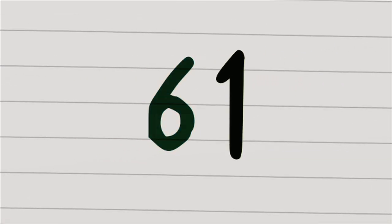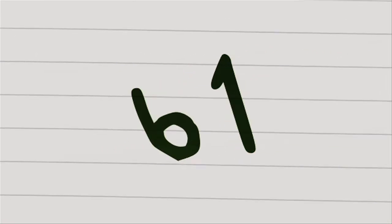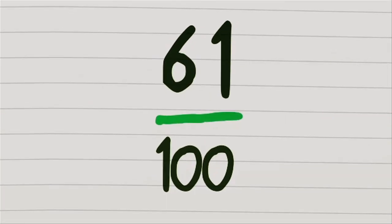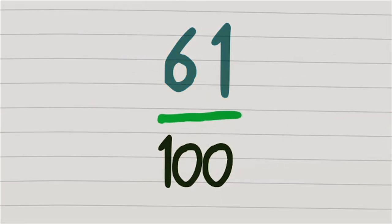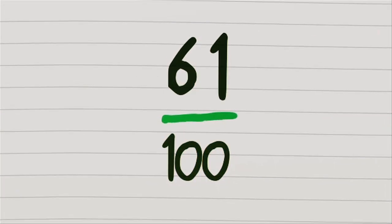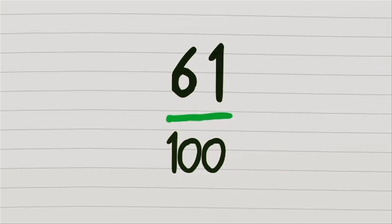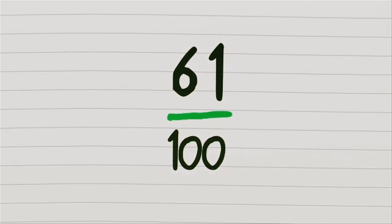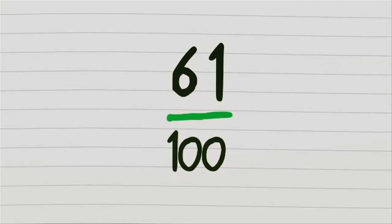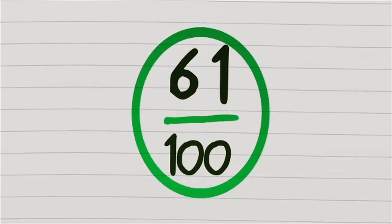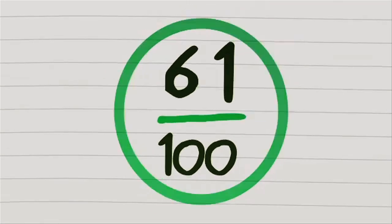Now let's tackle 0.61 — ignore the decimal to leave 61. To the right of the decimal we had two numbers, so now we're gonna put them over a hundred. His name as a fraction is 61 hundredths. With no numbers that can go into both, it won't cancel down and that's the end of the road.